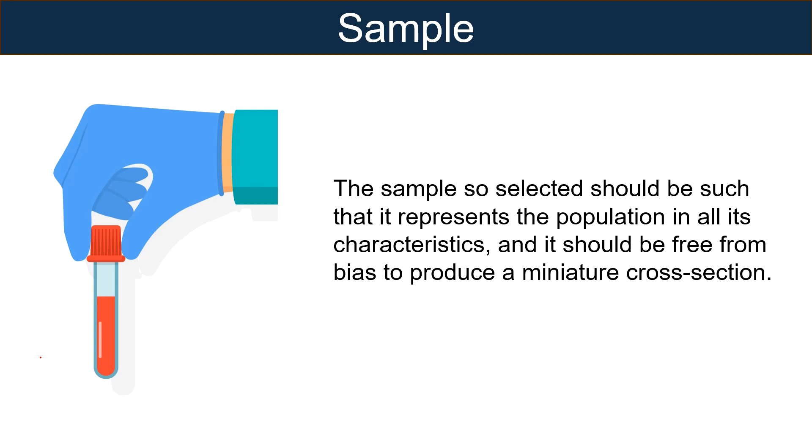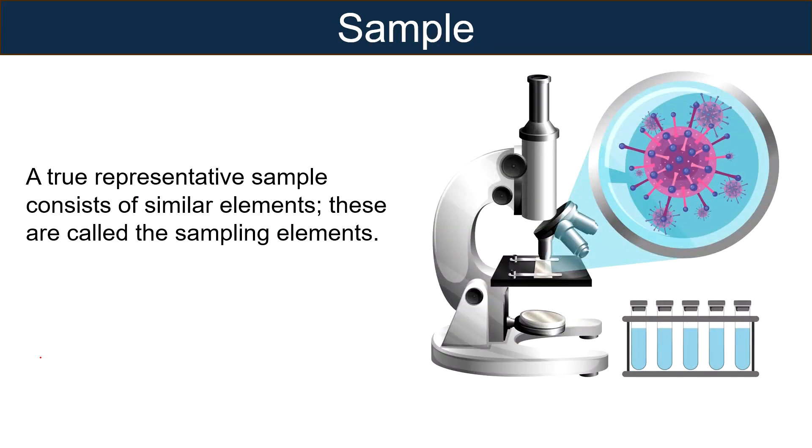The sample observations are used to make generalizations about the population. A true representative sample consists of similar elements. These are called sampling elements. The term representative means the sample subjects are not selected haphazardly but deliberately so that every element in the population has an equal chance of being selected for the study.